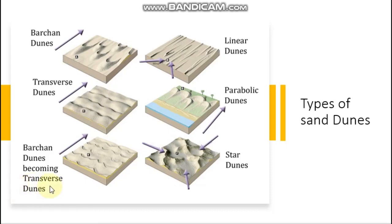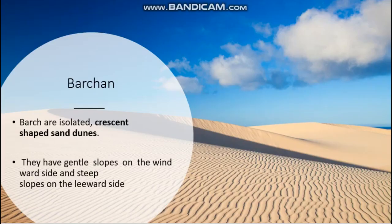In this picture we can see different types of sand dunes — barchan dunes, transverse dunes, linear dunes, parabolic dunes, and star dunes. Next one is barchan. What do you mean by barchan? Barchan are isolated crescent-shaped sand dunes. Crescent means half-moon shaped sand dunes.